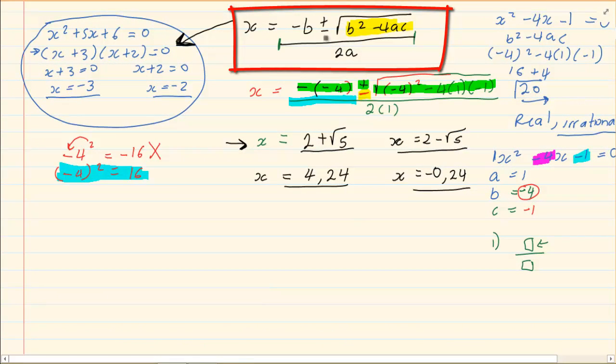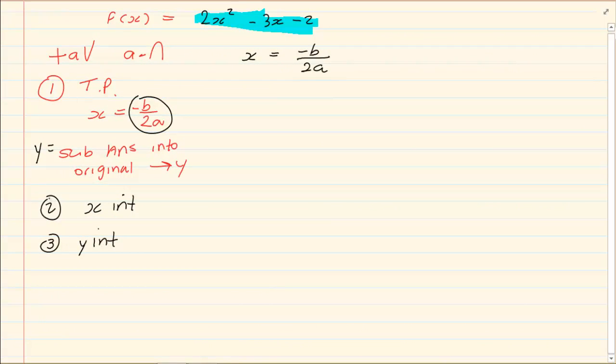Now look at this minus b over 2a is exactly the same that we're using. And like how we get a, b, and c from the quadratic equation, it's exactly the same way that we get a, b, and c in the graphs. So what is my b? My b is minus 3. So I'm going to have minus minus 3 all over 2 into 2. Therefore x equals 3 over 4.